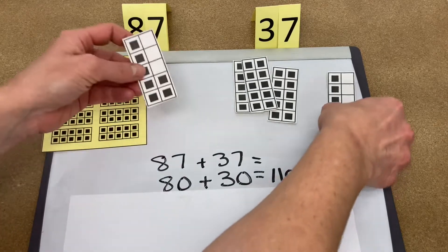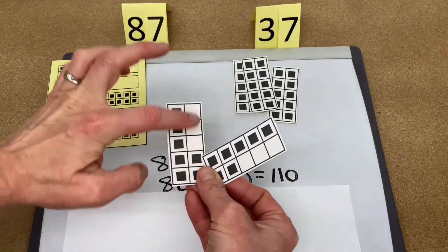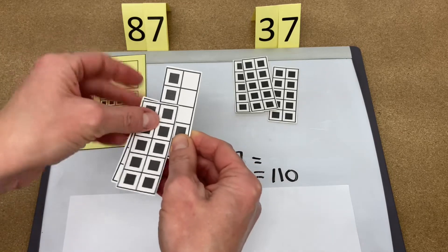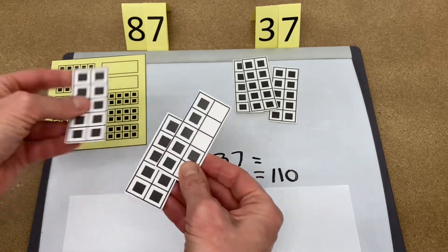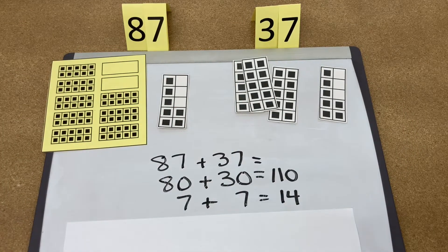Then we have 7 plus 7, and we know if we use the plus 7 strategy, there are three spaces. So the 7 is going to give 3 here, creating 10, and there are 4 left over. So a 10 and 4 is 14, so we write 7 plus 7 is 14.